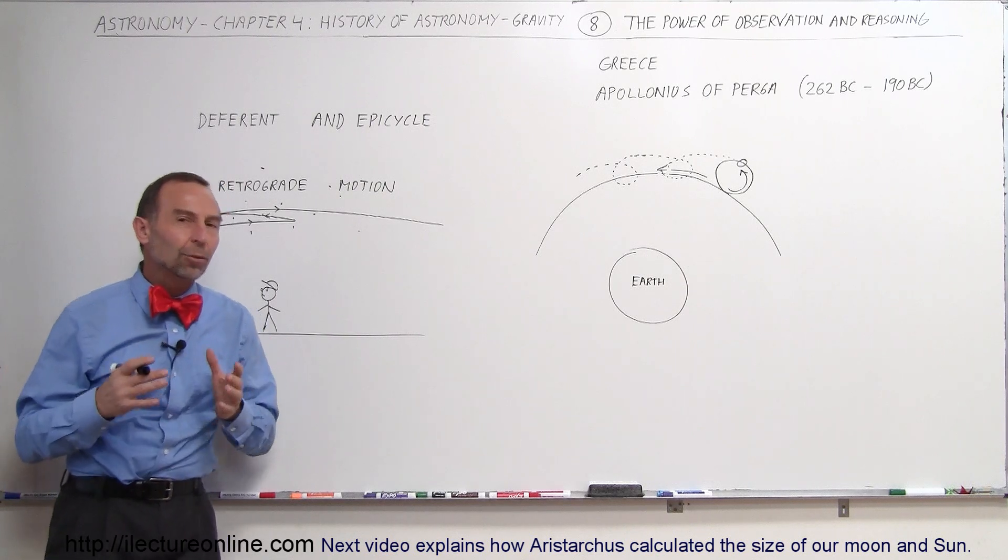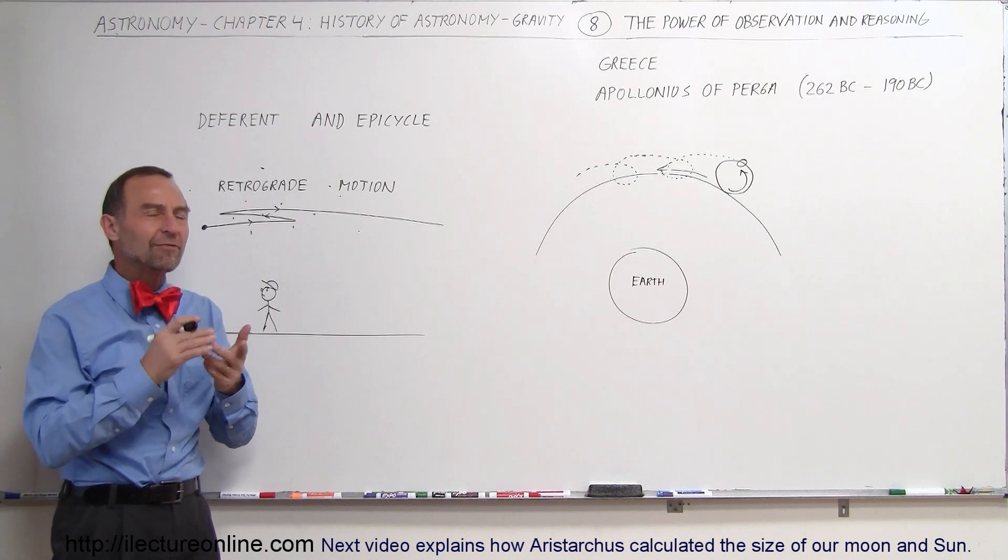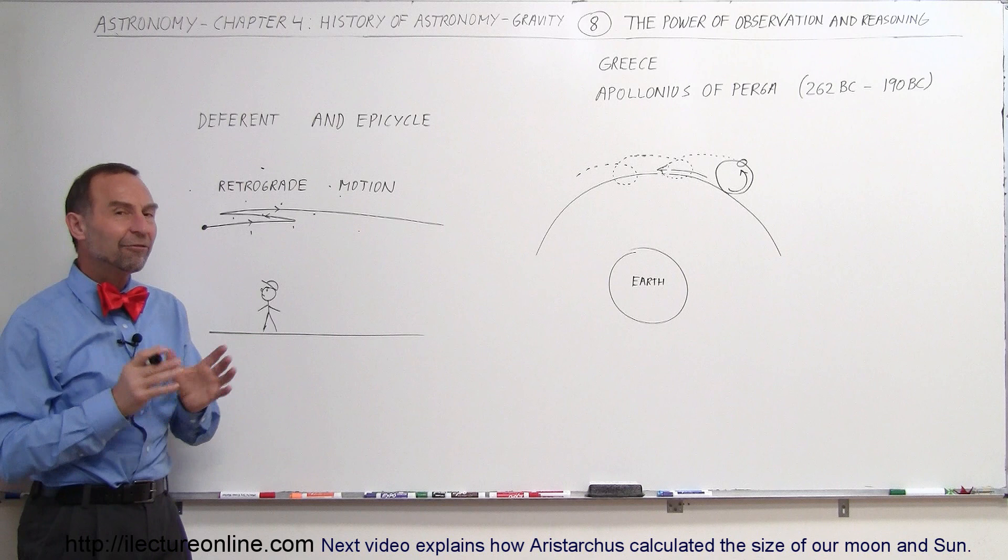People began to observe the planets, and at the time, five planets could be seen with the naked eye: Mercury, Venus, Mars, Jupiter, and Saturn were all visible in the night sky and fairly bright.